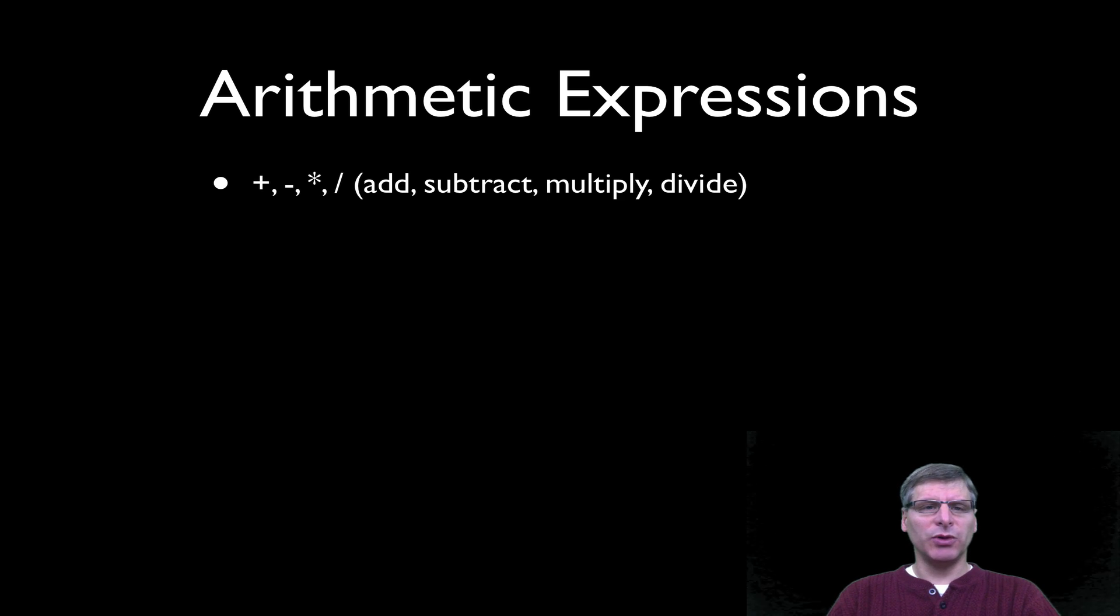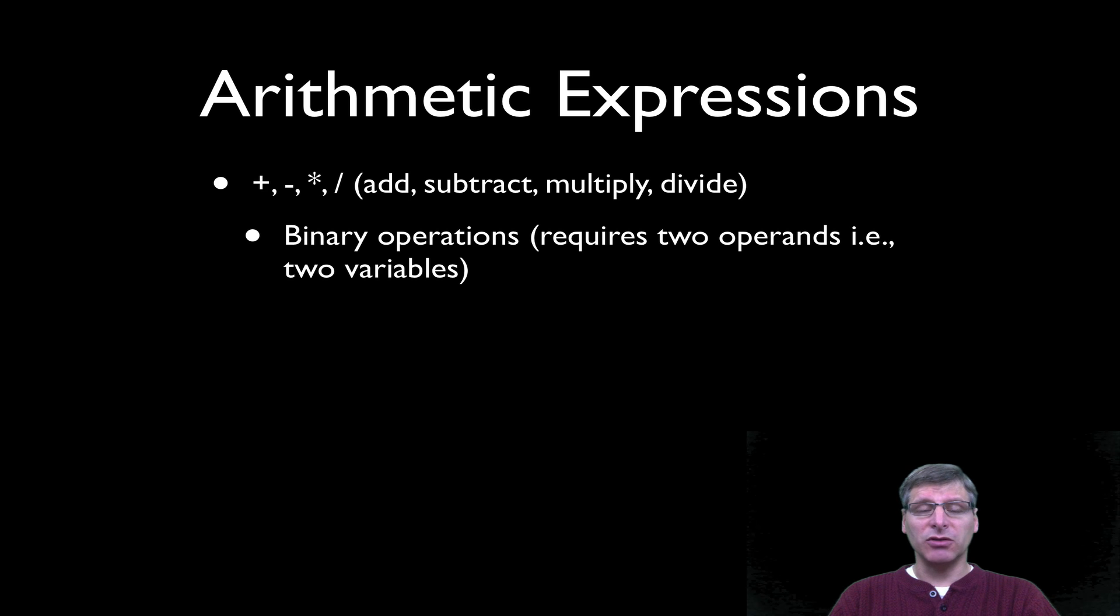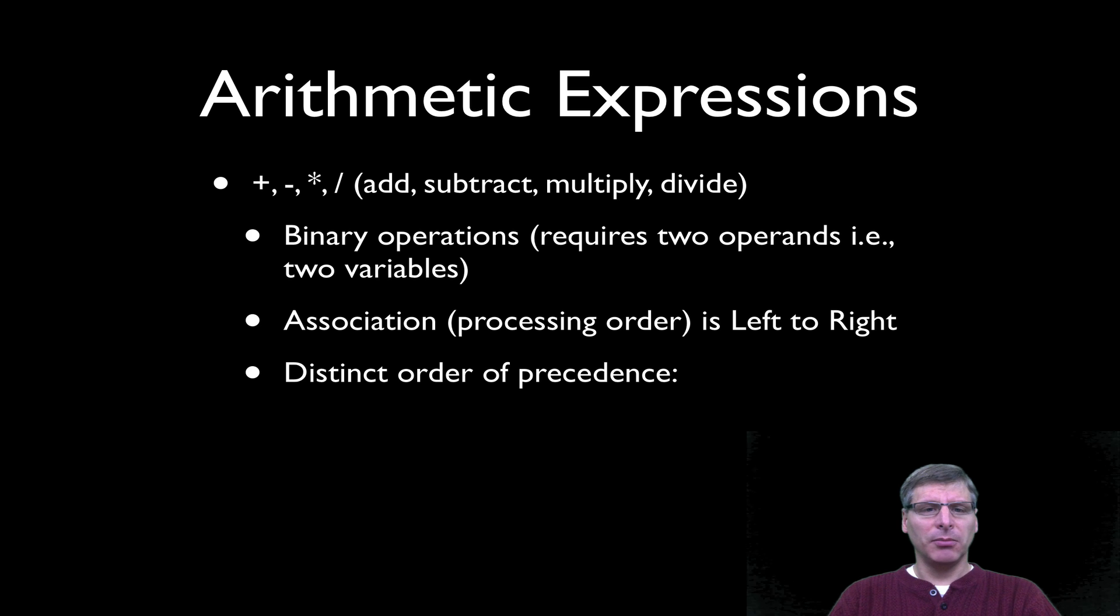In terms of arithmetic expressions, we have all the usual culprits in the C programming language. So we've got the plus operator, the subtraction operator, multiplication, and division. And these are binary operations of course. They require two operands, two variables, or two values. And if you've learned another language that has a C pedigree, you'll be very familiar with the syntax for expressions in C. Now the association on these binary operators, or the processing order, is from left to right as they appear in the expression. But we do have different precedents for different operators.